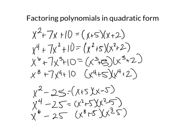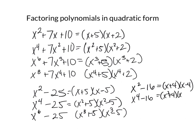Now we have to be careful because things can be factored even more. If I have x squared minus 16, that's x plus 4 times x minus 4. When I have x to the 4th minus 16, that becomes x squared plus 4 times x squared minus 4. And x squared minus 4 can be factored more — x plus 2 times x minus 2. So you have to be careful to look for a difference of squares in the new factors as well.